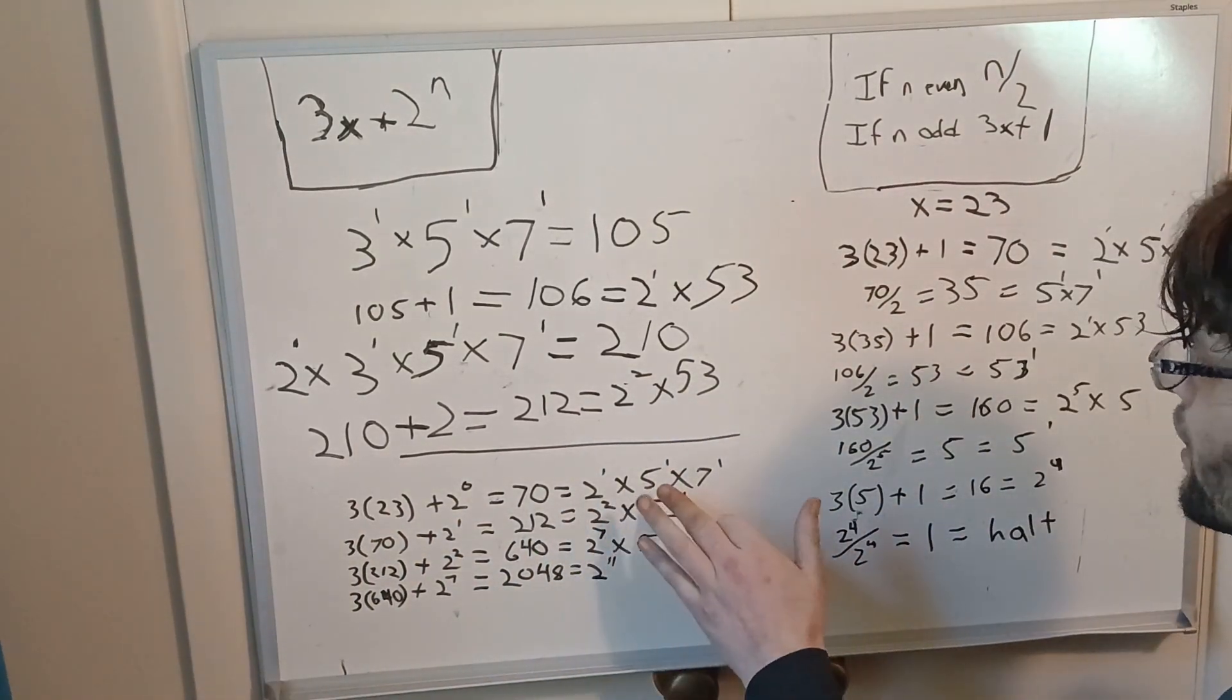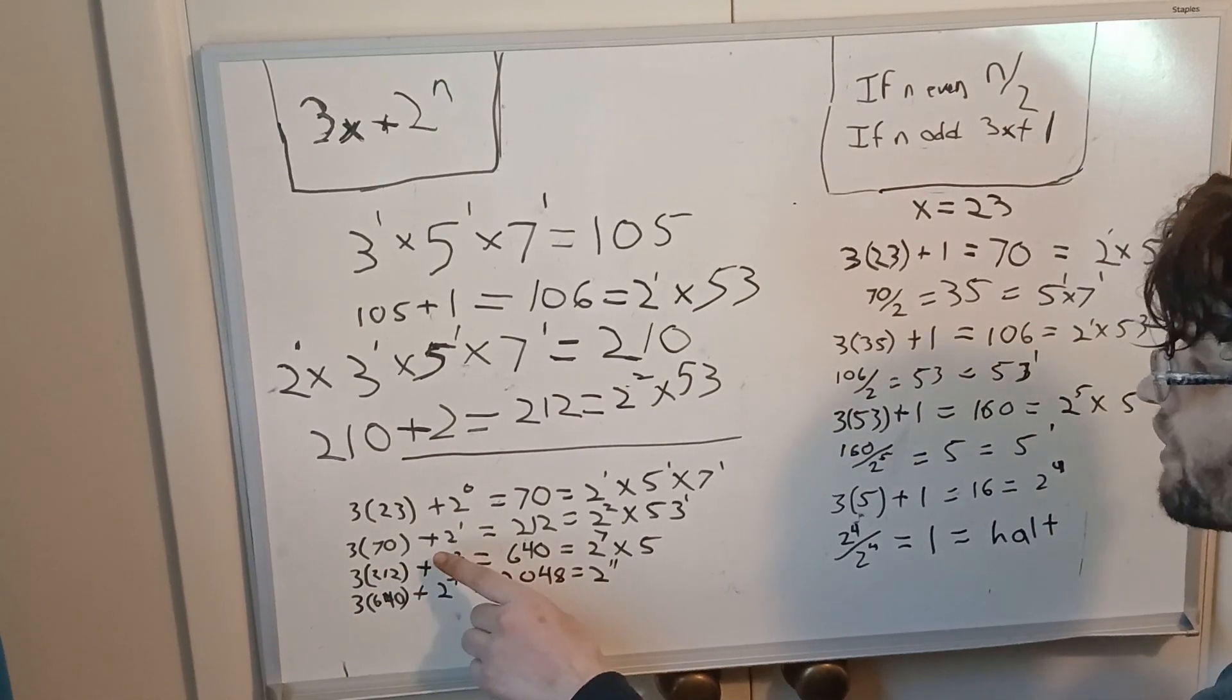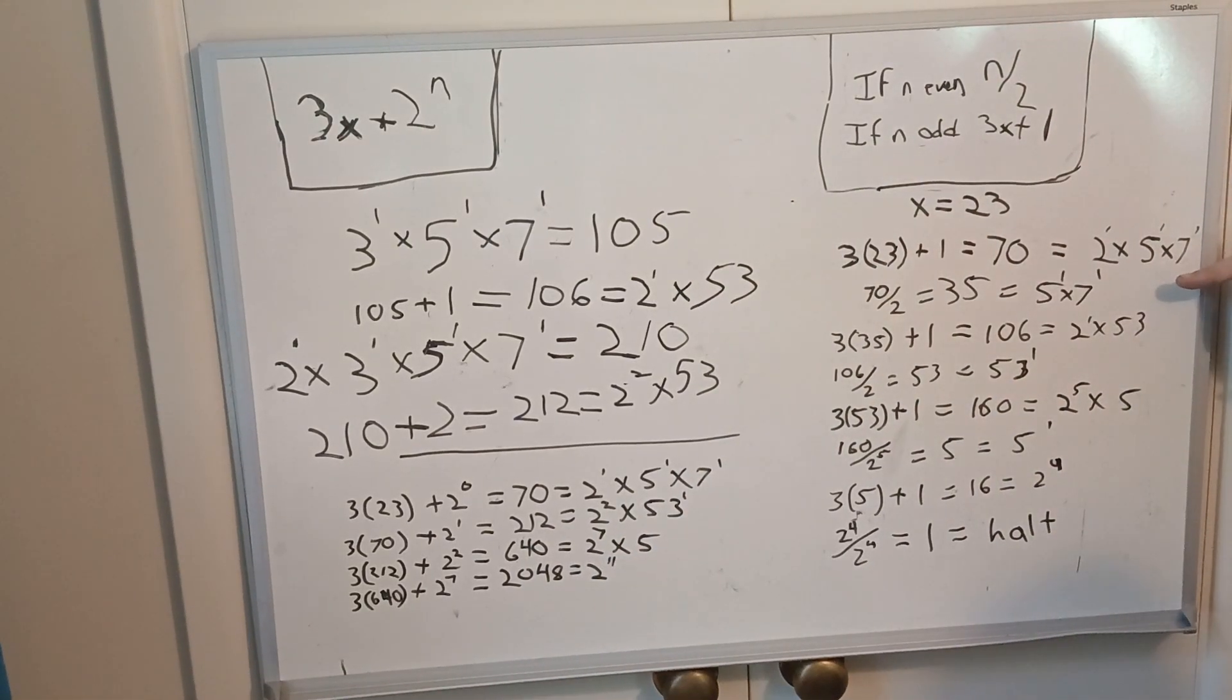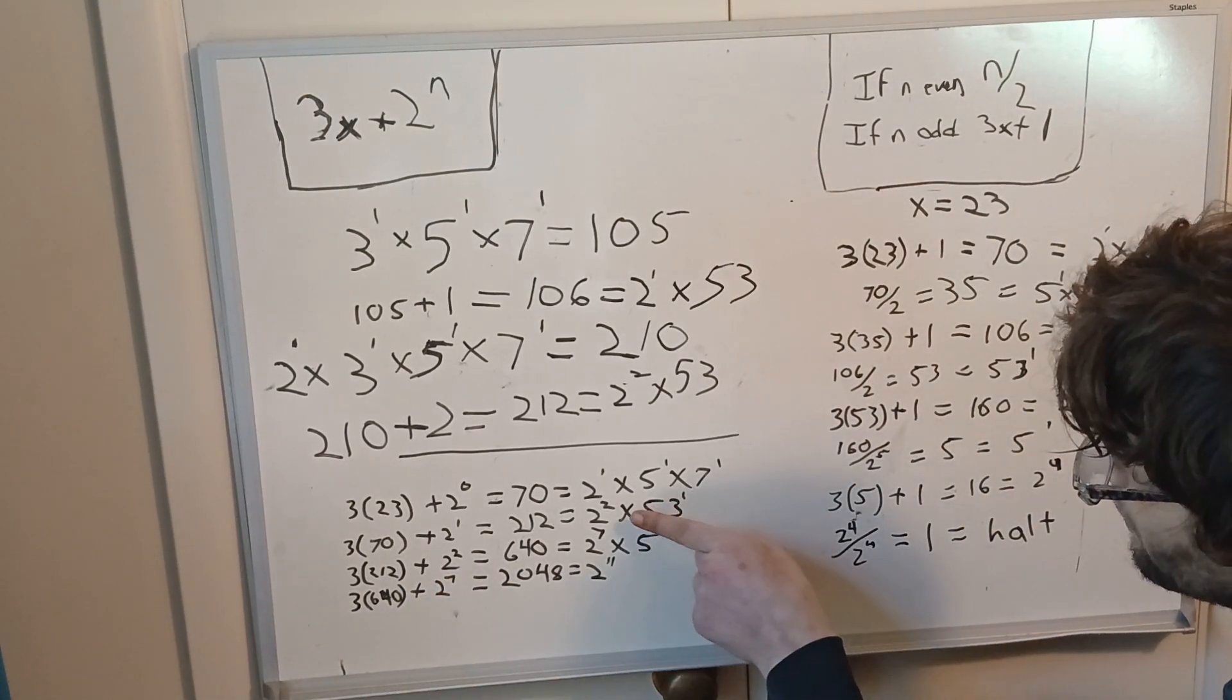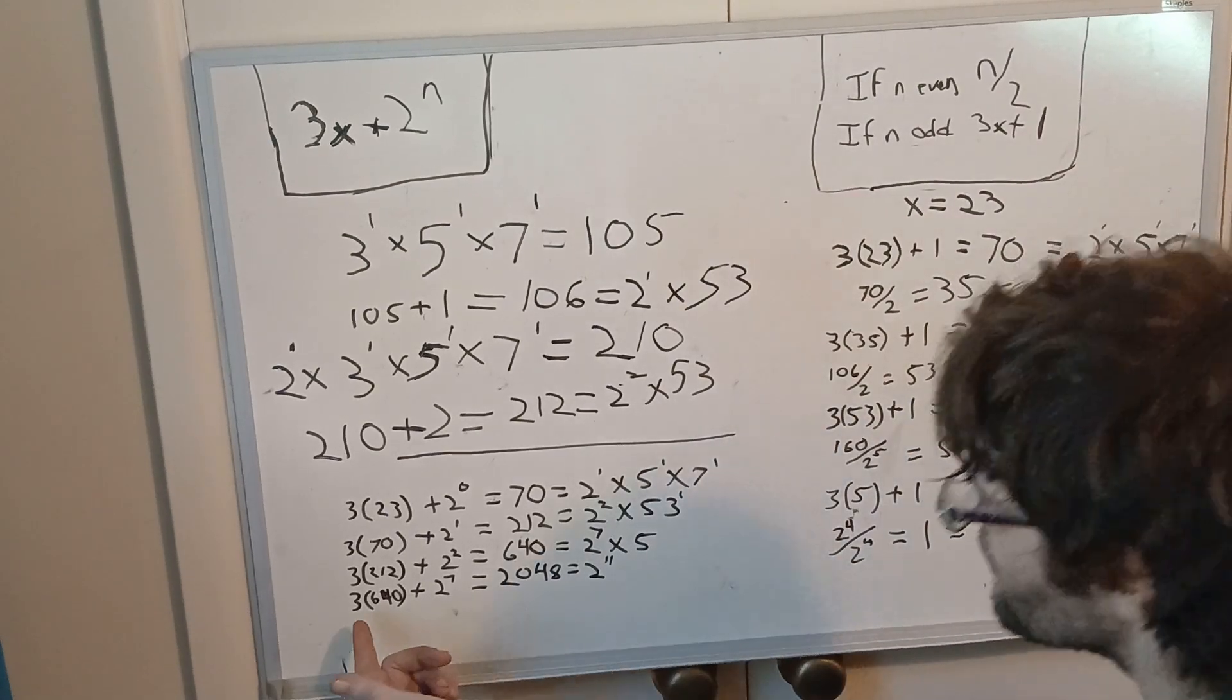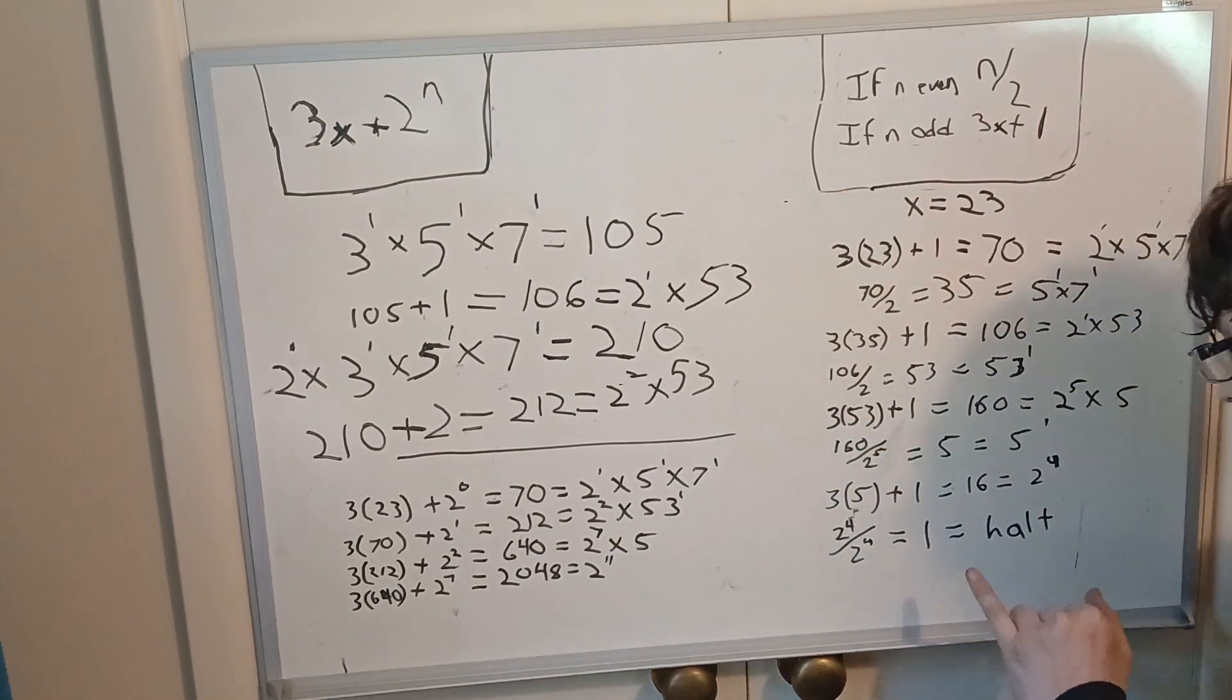In my form, we only add the largest prime power 2. So 3 times 23 plus 2 to the 0 instead of 1 equals 70, which is 2 to the 1, 5 to the 1 times 7 to the 1, same thing we have here. Now I don't have it, I just do 3 times 70 plus the largest prime power that divides 70. That gets me to 212, or 2 to the 2 times 53, the same 5 times 7 that we have here. 3 times 212 plus the largest prime power that divides 212, which is 4, is 640, which is 2 to the 7 times 5. Now we just move to 5 like we were supposed to. 3 times 640 plus 2 to the 7 is 2048, that's 2 to the 11 for my 11 halving steps, for my 2 to the 4 here where I halt.